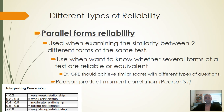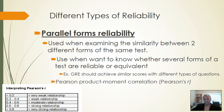Parallel forms reliability is another form used when examining the similarity between two different forms of the same test — used when you want to know whether several forms of a test are reliable or equivalent. Going back to the GRE example: if you take the test once and then again, you'll probably get completely different questions, but your scores are probably going to be very similar, if not exactly the same. Although the questions change, they're assessing the same domain — vocabulary, math skills, general skills — and you're still achieving the same results. It's calculated using the same method as the test-retest, the Pearson's R.